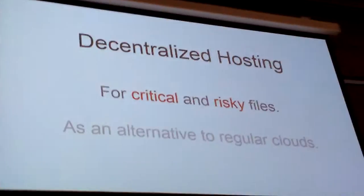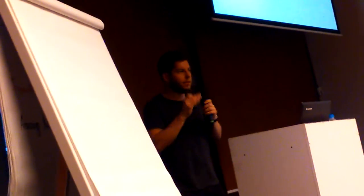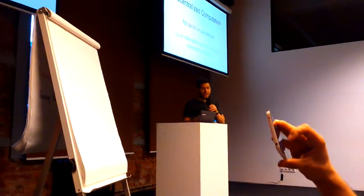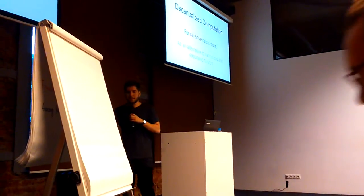Decentralized hosting for critical and risky files — for example, family photos. You don't want Dropbox viewing or having access to your family photos, so it's better to save them in a decentralized encrypted network where every file is split up and distributed across many different nodes. You can also build decentralized computation as a service for sensitive calculations — for example, if you're running a casino and you need to generate a random number, how do you do that? It's extremely complicated, and you need to prove that the random number is really random and not tinkered with so that the casino makes more money.